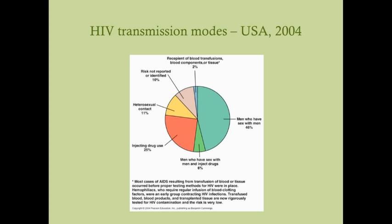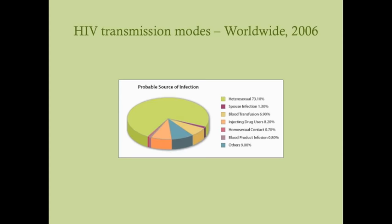Worldwide, 73% of HIV transmission is through heterosexual intercourse, and male-male homosexual contact accounts for less than one percent. So in the United States this is more of a problem among men who have sex with men, whereas on a global scale this is a problem affecting heterosexuals and homosexuals alike.